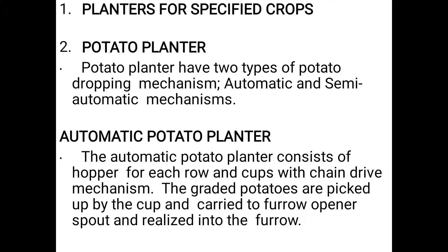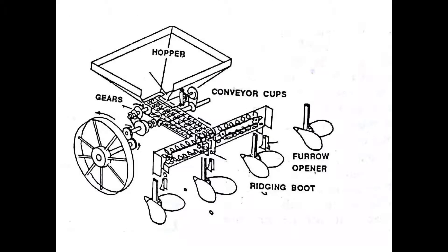Planters for specified crops. Potato planter: Potato planters have two types of potato dropping mechanisms — automatic and semi-automatic. The automatic potato planter consists of a hopper for each row and a cup with chain drive mechanism. The graded potatoes are picked up by the cup and carried to the furrow opener spout and released into the furrow. The figure shows the potato planter with its various parts: gears, hoppers, conveyor cups, rising boot, and furrow openers.